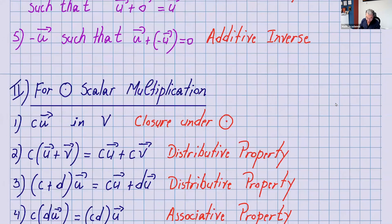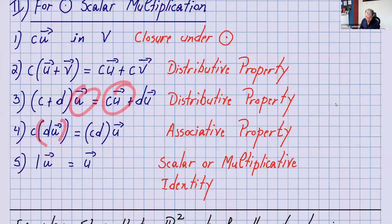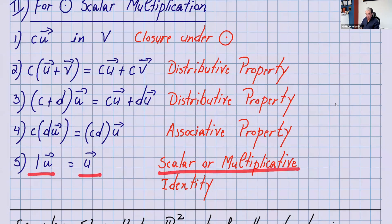The second operation is scalar multiplication. Axiom six: C times U must be in V — closure under scalar multiplication. Axiom seven: C times (U plus V) equals CU plus CV — that's the distributive property, distributing the scalar. Axiom eight: (C plus D) times U equals CU plus DU. Axiom nine: C times (DU) equals CD times U — the associative property of scalar multiplication. Axiom ten: 1 times U equals U — the multiplicative identity.